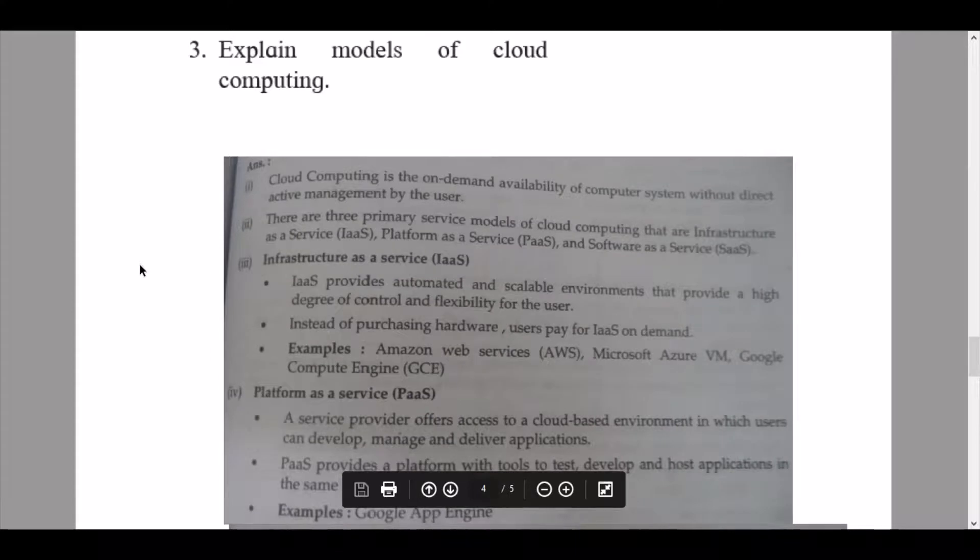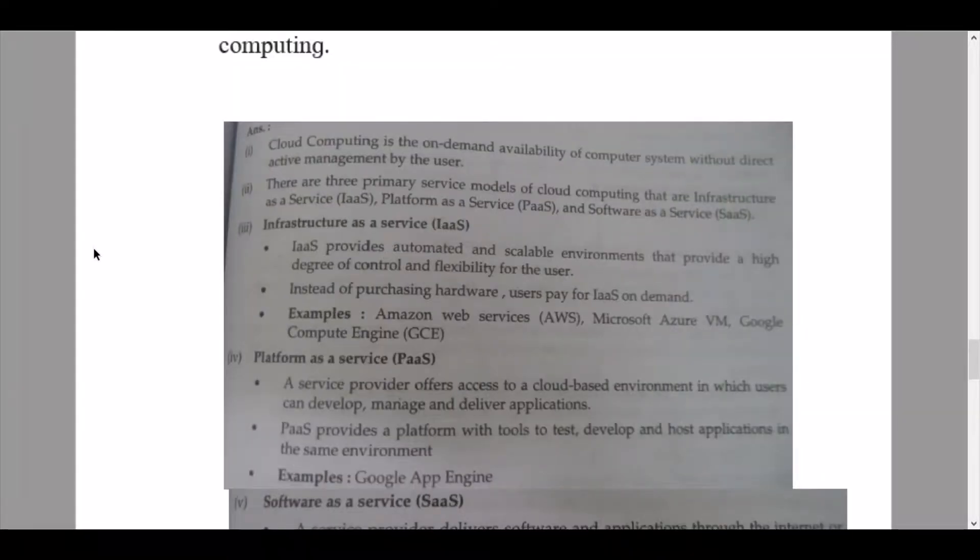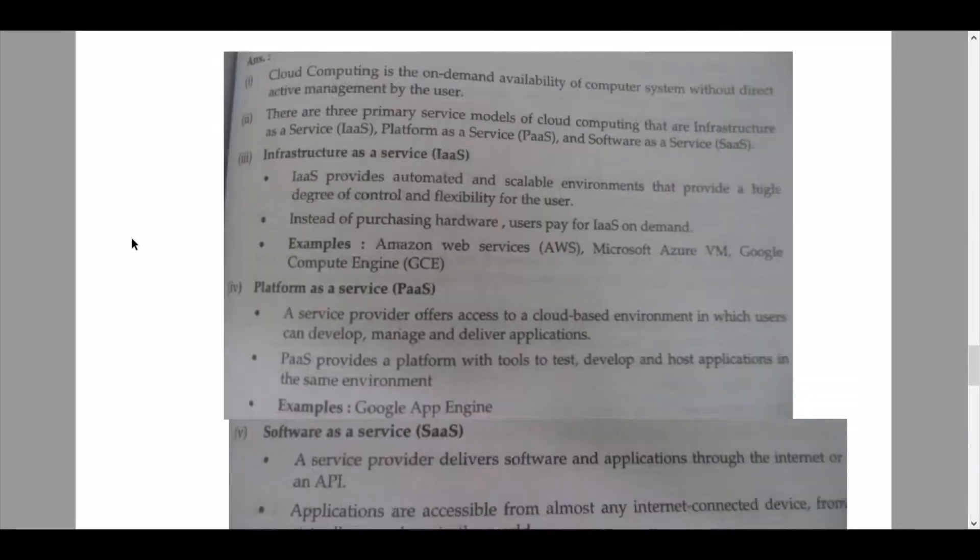Then we continue to the third sub question, that is explain models of cloud computing. Here we have been given the answers. It's a pretty lengthy one, but the board expects you to understand this. I keep on repeating this because you need to understand this before you write it. If you do not understand this, you'll just become a 'ratu popert' and memorize everything instead of understanding. Cloud computing is the on-demand availability of computer system without direct active management by the user. There are three primary service models of cloud computing: Infrastructure as a Service, Platform as a Service, and Software as a Service.